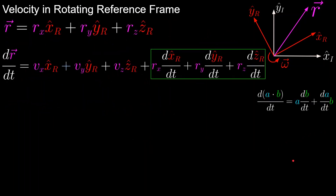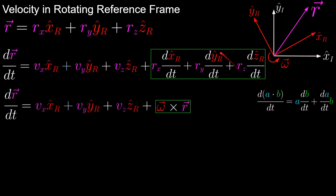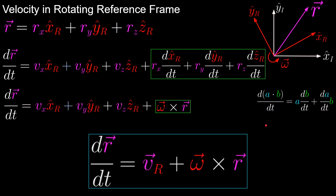Now we go back to our full equation and we can plug in our generalized form of the green box term — omega cross r — and our velocity vector, to get the final form of the derivative of the r vector with respect to time in the rotating frame. This is equal to the velocity as seen in the rotating frame, plus the omega cross r term that accounts for the rotation of the frame.